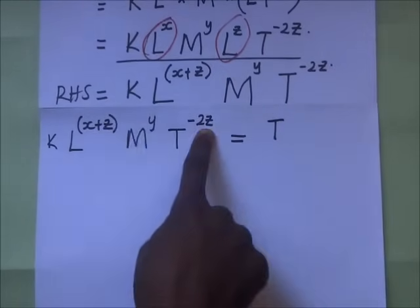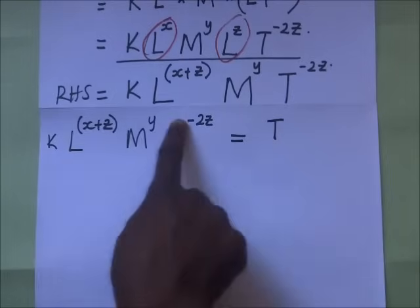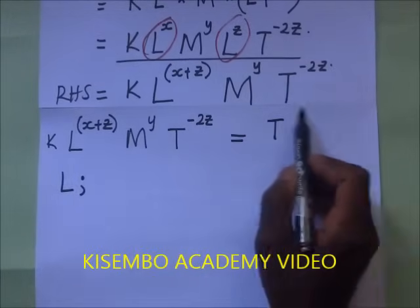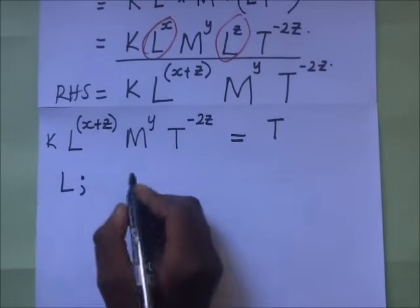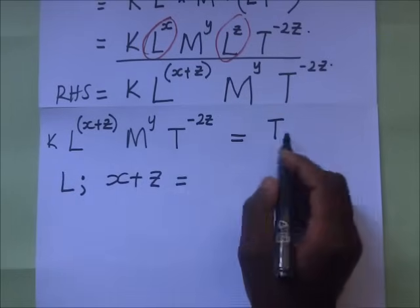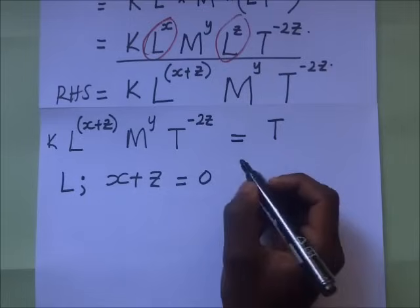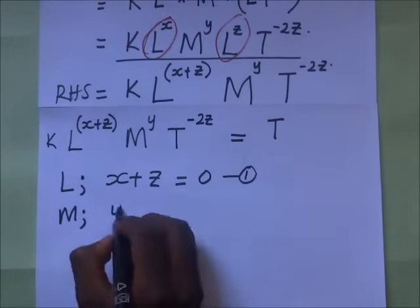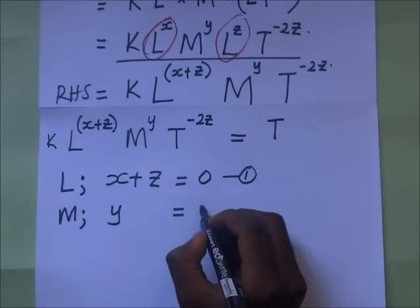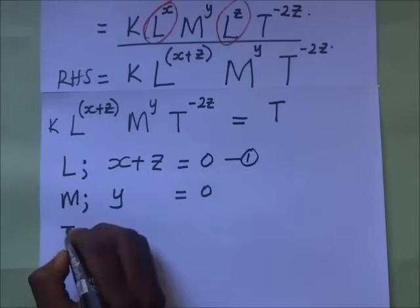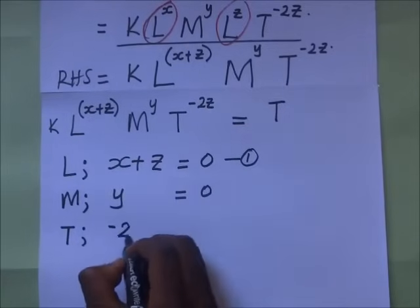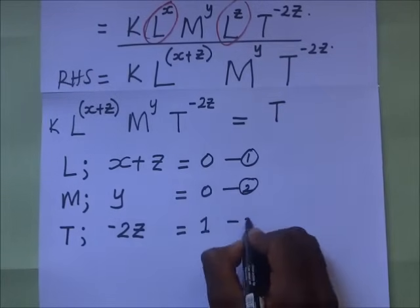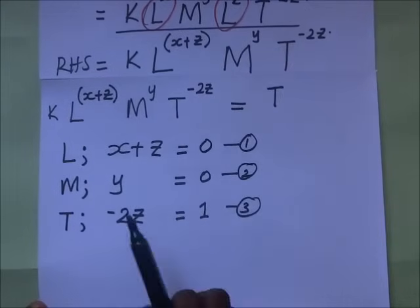To find the values of x, y, and z, we equate the powers on both sides. For L: the power on the right is x + z, and the left-hand side has no L, so x + z = 0 — that is equation one. For M: the power on the right is y, and the left-hand side has no M, so y = 0 — equation two. For T: the power on the right is −2z, and T is to the power 1 on the left, so −2z = 1 — equation three.